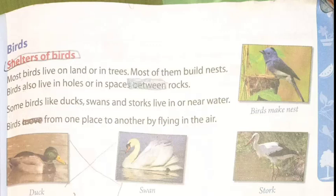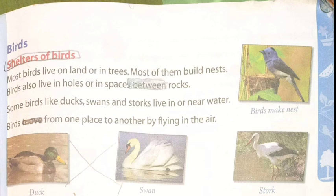Birds: most birds live on land or in trees, and most of them build nests. Birds also live in holes or in spaces between rocks. Some birds like ducks, swans and storks live in or near water. Birds move from one place to another by flying in the air.